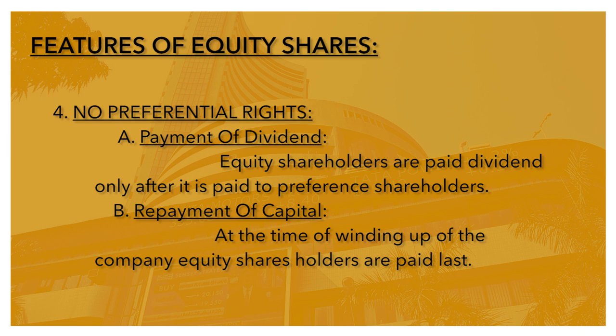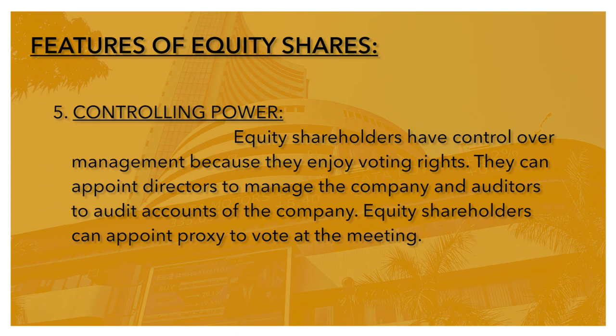Number 4: No Preferential Rights. A: Payment of dividend — equity shareholders are paid dividend only after it is paid to preference shareholders. B: Repayment of capital — at the time of winding up of the company, equity shareholders are paid last. Equity shareholders को preferential rights नहीं मिलते। Preference shareholders के बाद dividend दिया जाता है, और जब company बंद होती है, तो equity shareholders को सब के बाद capital repay किया जाता है।